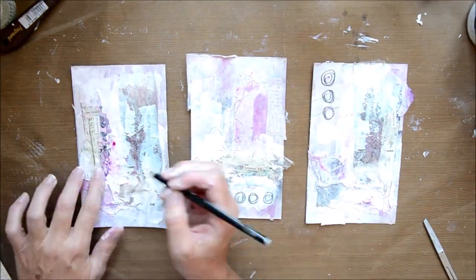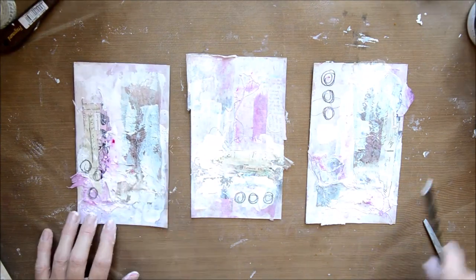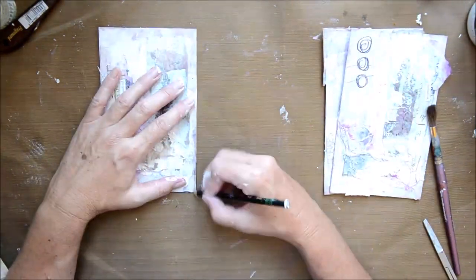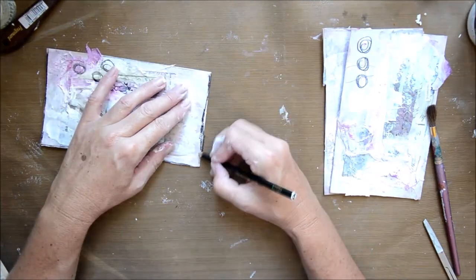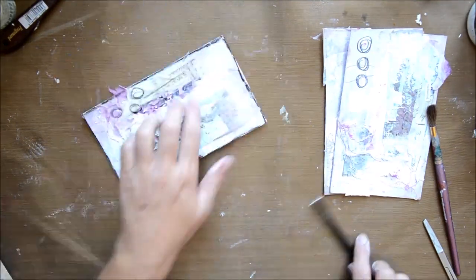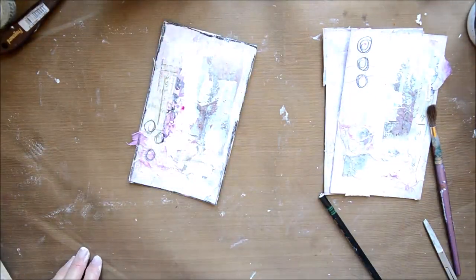Then I just get a Stabilo out and do a couple of little circles just to add some interest, and then doing my usual going around the outside, edging it with the Stabilo and then activating it all loosely with water.